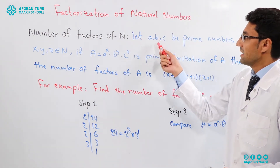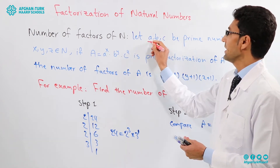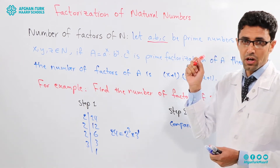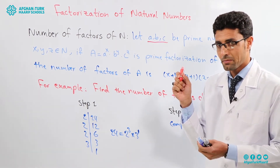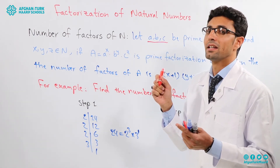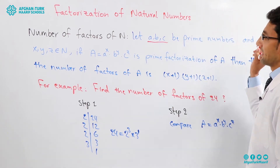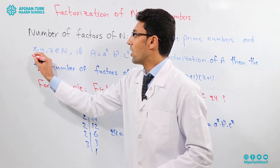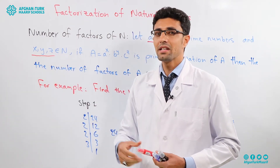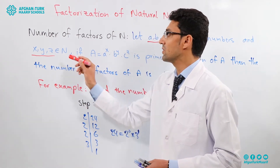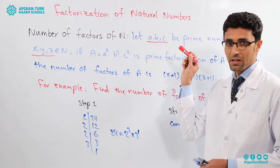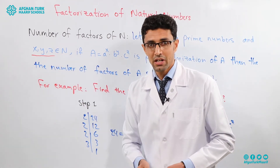Let a, b, c be prime numbers. Prime numbers have only two factors: one and itself. Let x, y, z belong to the natural numbers — meaning there are three numbers which belong to the natural numbers. So a, b, c are prime numbers and x, y, z are natural numbers.